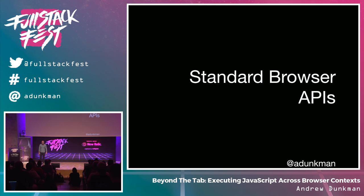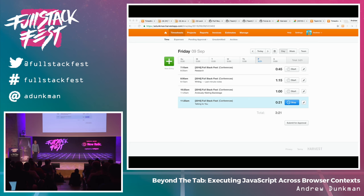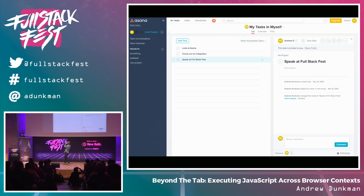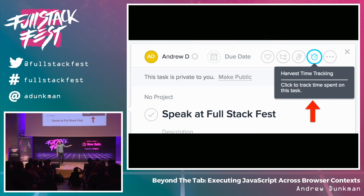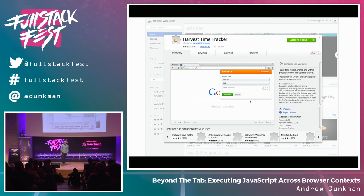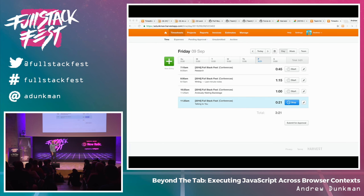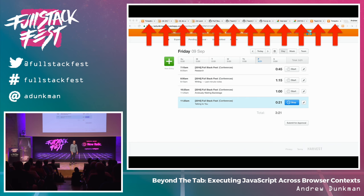Let's get into the meat of the talk and talk about standard browser APIs. If you're like me, your development environment looks a little like this when you're working — you've got a whole bunch of tabs open. I work for a company called Harvest, a time tracking company. We have a feature that lets you add time tracking into apps. We also have a Chrome extension that injects some of these integrations. So if we're doing our job right as a company, every single one of your tabs is connected to our service — tabs from Harvest, Trello, Basecamp, and GitHub.